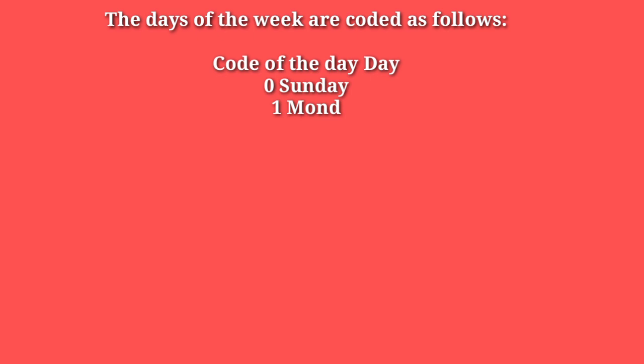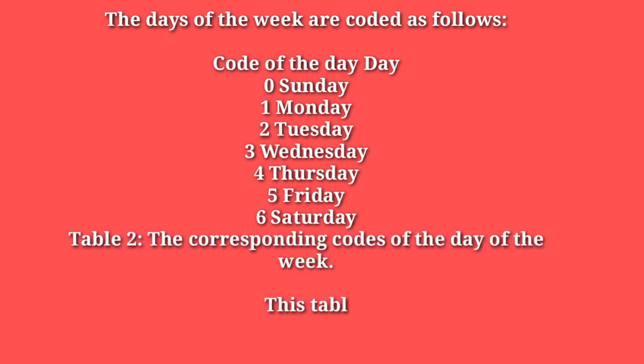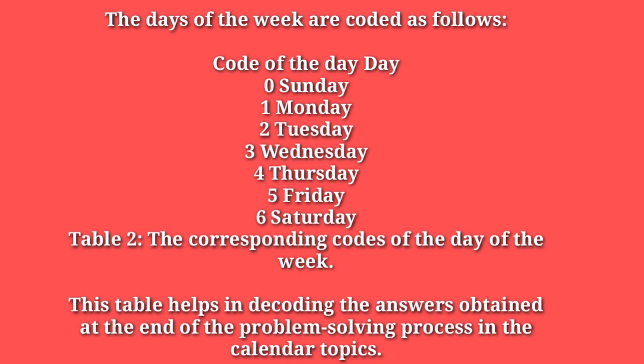In the next slide, the days of the week are coded as follows: Sunday = 0, Monday = 1, Tuesday = 2, Wednesday = 3, Thursday = 4, Friday = 5, Saturday = 6. The week generally starts with Monday, so Sunday is coded as 0. This table helps in decoding the answer obtained at the end of a calendar problem.